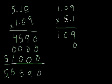Put a 0 here. 5 times 9 is 45. Carry the 4. 5 times 0 is 0 plus 4 is 4. 5 times 1 is 5.